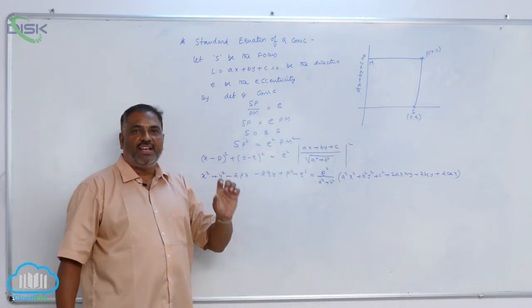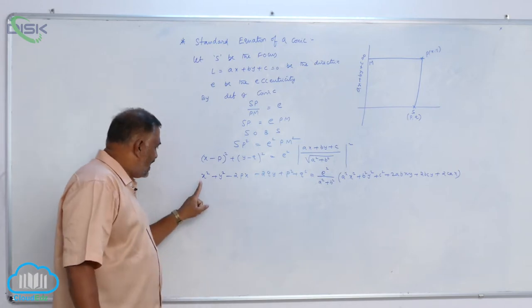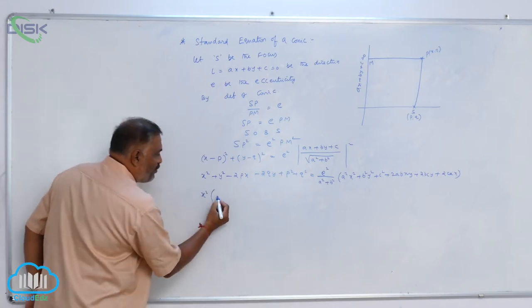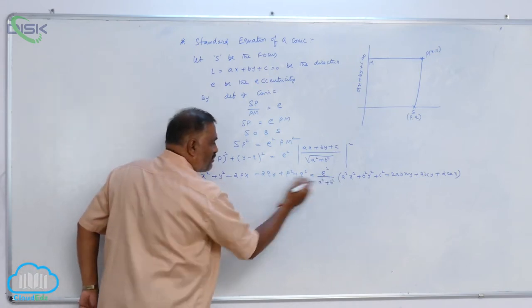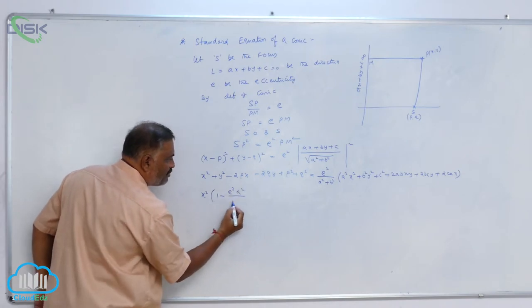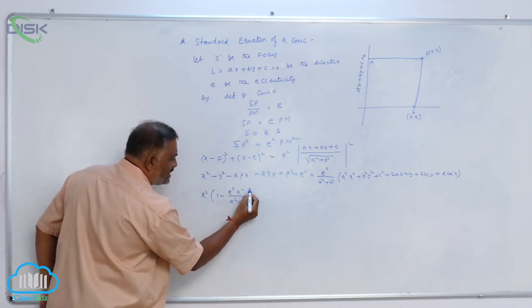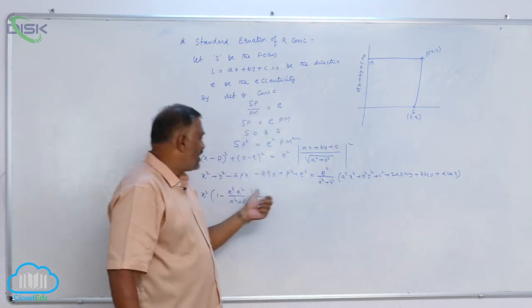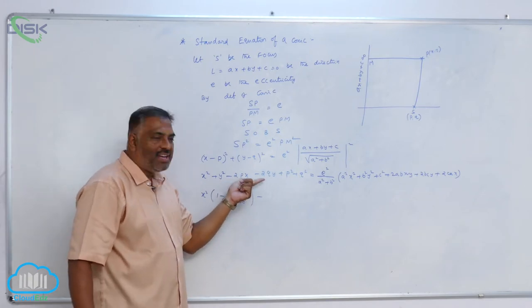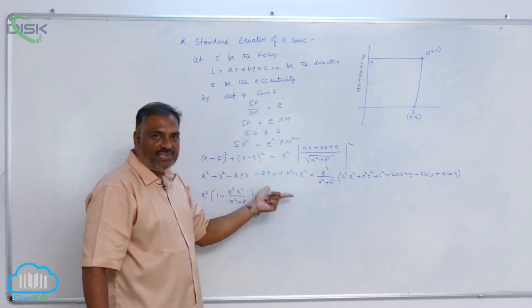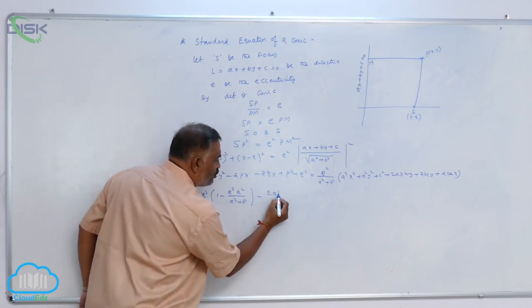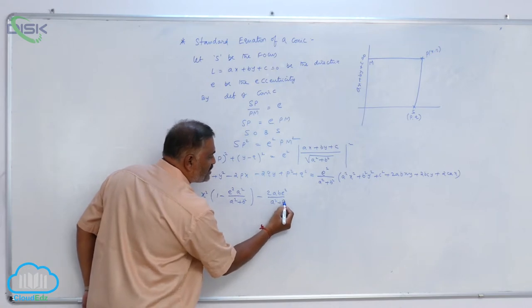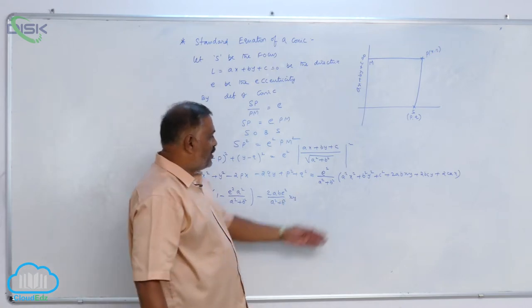Now, collect all the terms in a systematic way. Here, X square is there, here also X square is there. Take X square into 1 minus, this term coming over here, E square A square by (A square plus B square). Now, XY term is available. Bring this XY term here. You observe that no XY term is there on LHS part. So, minus 2ABE square divided by (A square plus B square) into XY. So, XY term is over.